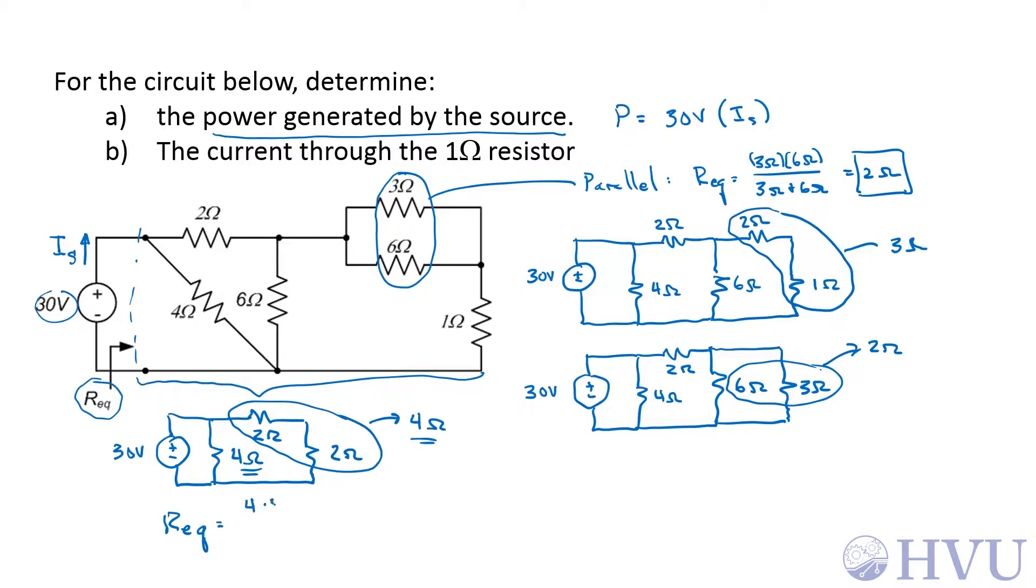is 4 times 4 over 4 plus 4, the product of the two divided by the sum of the two, which is 2 ohms. So I sub S is 30 volts over 2 ohms, or 15 amps. And the power delivered by the source is 30 volts times 15 amps, which is 450 watts.